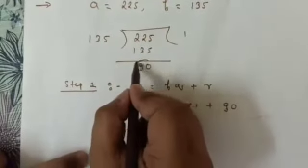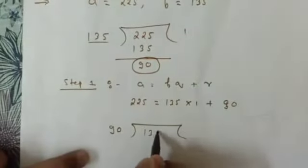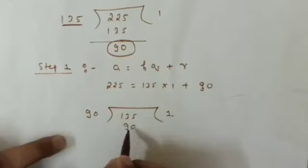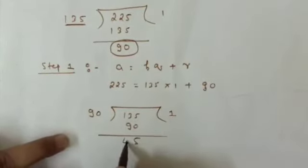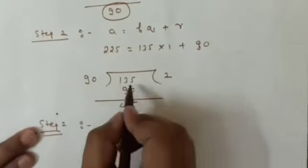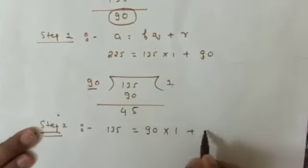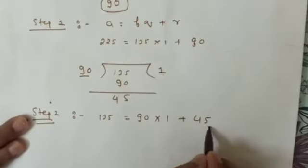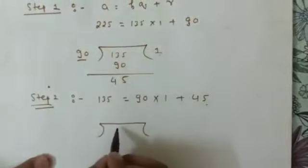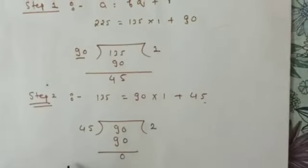You have to continue the process. The remainder from the previous step becomes the new divisor, and the previous divisor becomes the new dividend. Step 2: dividing 135 by 90 gives quotient 1 and remainder 45, so 135 = 90 × 1 + 45. The remainder is still not 0, so continue. Step 3: dividing 90 by 45 gives quotient 2 and remainder 0, so 90 = 45 × 2 + 0.